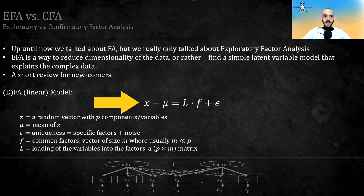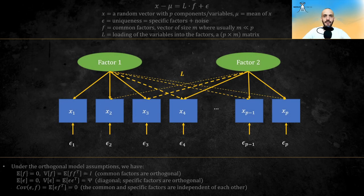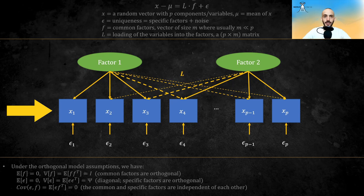This is the EFA model. We assume that the variables are actually a linear function of some latent factors called common factors, plus some uniqueness, which can be further broken down into specific factors and noise. The coefficients that relate the factors to the variables are called loadings. This is the graph of how it looks like. We have in circles the factors, and they actually manifest different observed variables, depicted here in squares. In EFA, all factors affect all variables, though we are trying to find some representation which groups the factors with the variables that they affect the most.